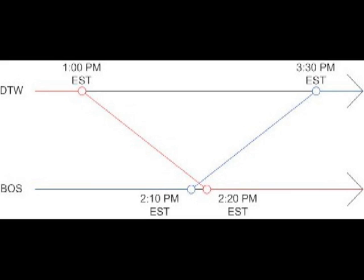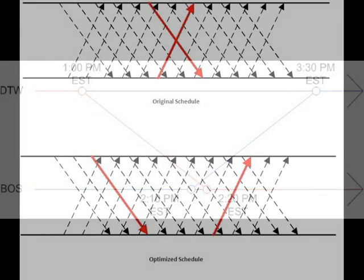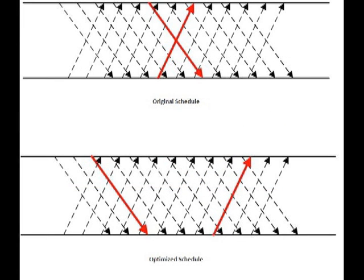What we do is we take that into account with this idea of time window—rescheduling flights within a certain amount of allowed time. To figure out how many airplanes the airline would need after they reschedule the planes accordingly, we set a time window so they can't reschedule flights whenever they want. It has to be within plus or minus 15 minutes, for example.